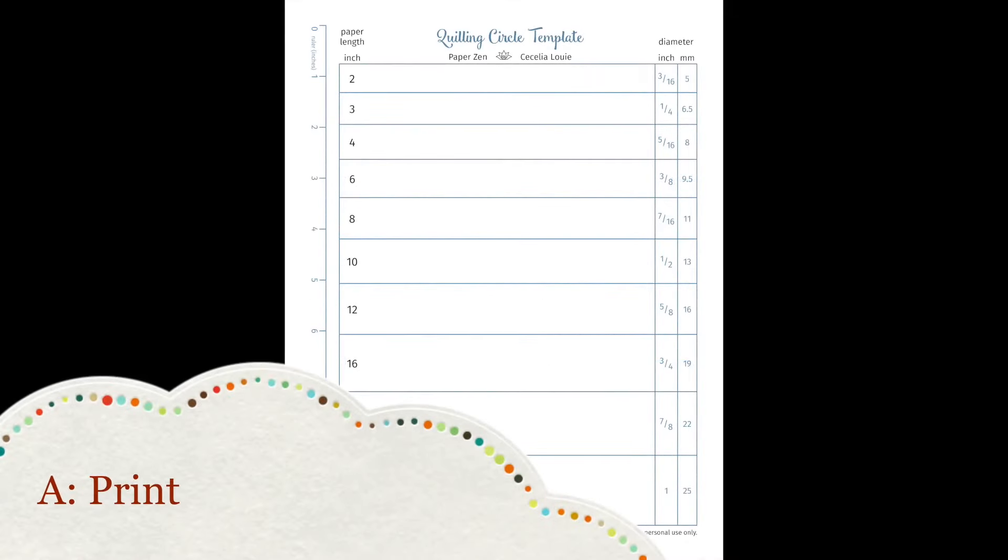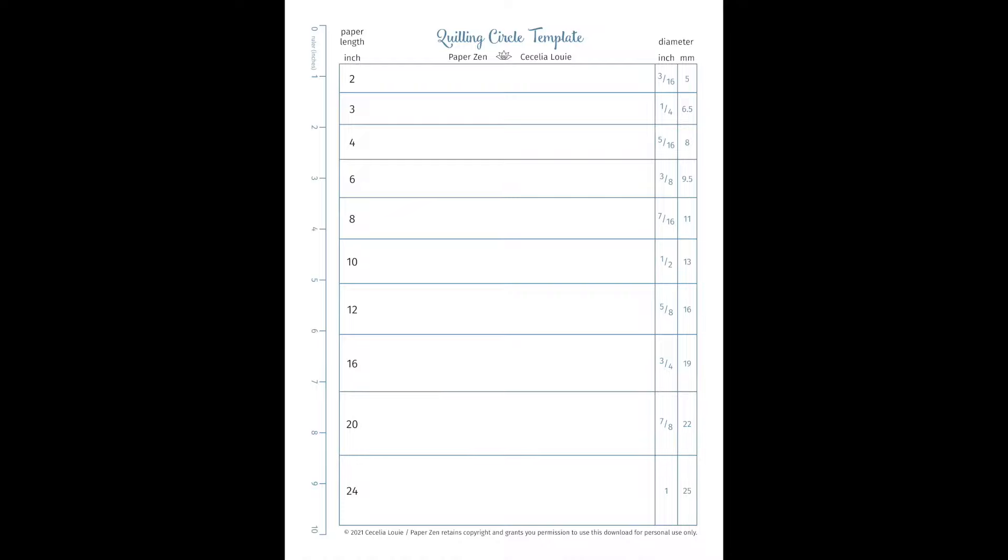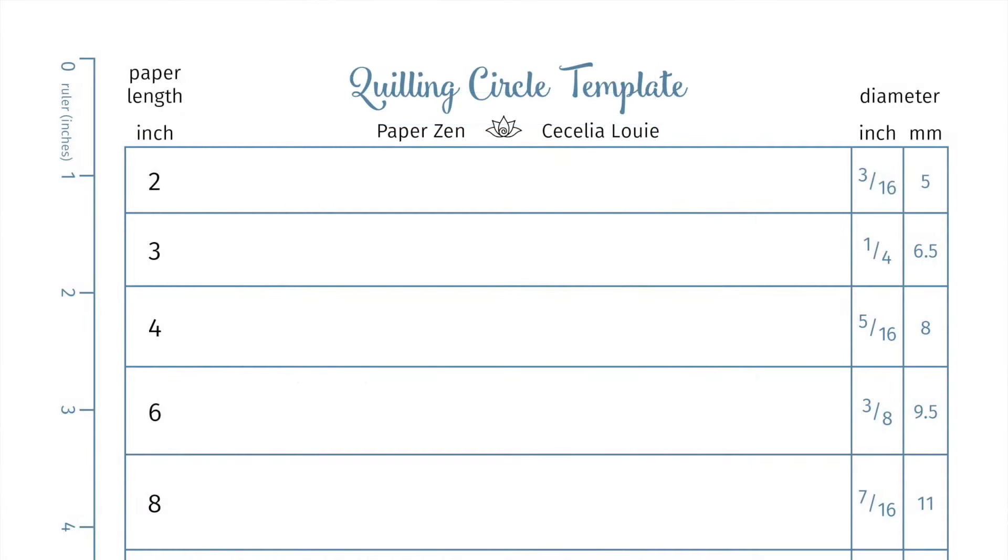For the first one, we're going to print this PDF template onto cardstock. You'll notice there are no circles printed on it because I'm going to cut them out, so I don't want any printed circles in the way.